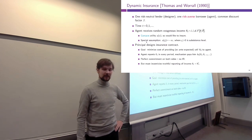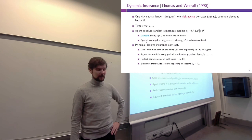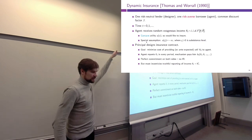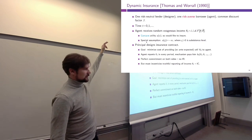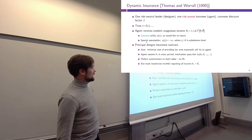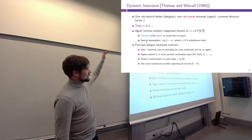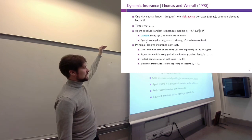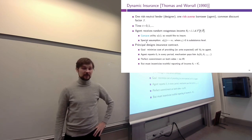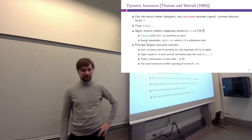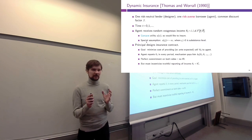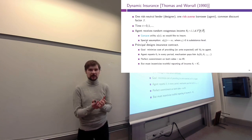Both share the common discount factor δ and use regular exponential discounting. Time is discrete, periods go from 0 to infinity — an infinite horizon model. The agent's income is an iid random variable; we denote income in period t as θₜ, drawn independently from the same distribution each period. This means the agent cannot affect their income in any way.